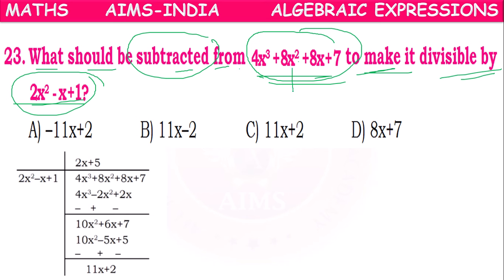Suppose if this expression is p(x), it is not completely divisible by g(x). If p(x) is divided by g(x), some remainder will come. If we subtract the remainder from p(x), then it will be divided completely by g(x). So first we have to divide these two and find the remainder.